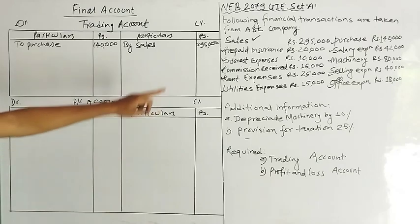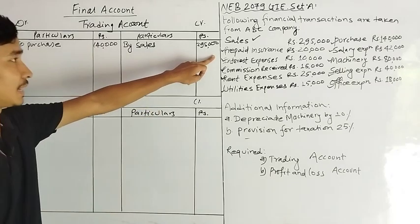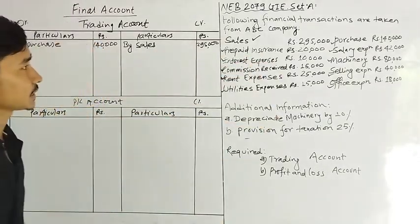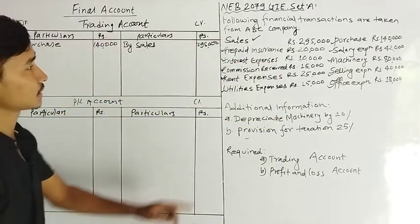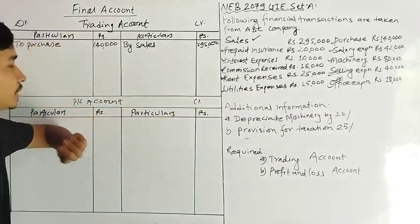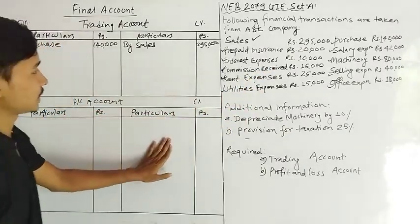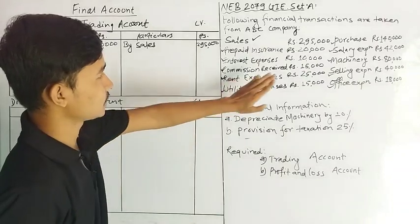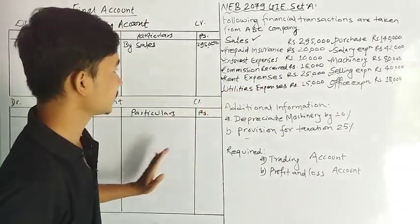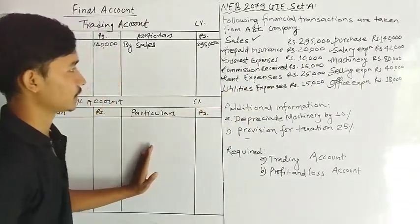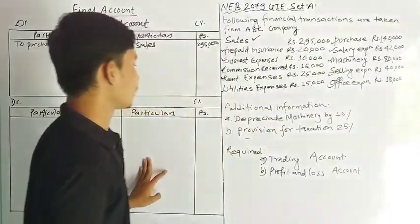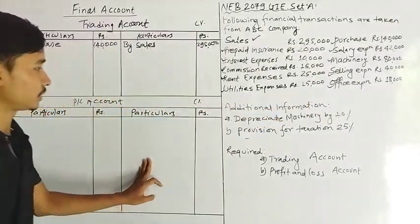We are going to have a balance sheet — salary expenses, interest expenses, machinery balance sheet, commission received. We are going to have a P&L appropriation card.